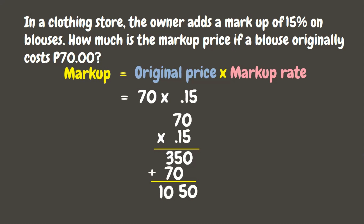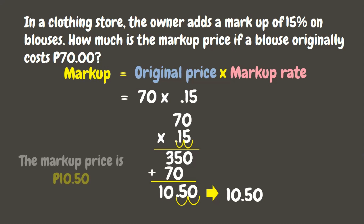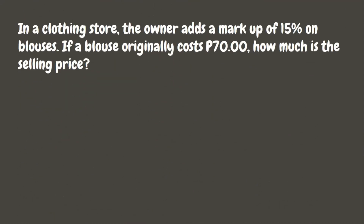Our answer is 1050, but since there are two decimal places, we also need to move the decimal point of the product two times to the left — one, two. There you go. Our final answer for the markup price is 10.50. Now, with the same problem, we need to look for the selling price.